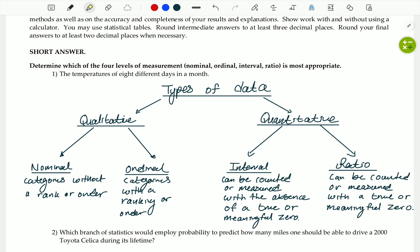Ratio is the same as interval, except there is a true or meaningful zero. So zero indicates you don't have it. You go to your bank account and it says zero dollars in your savings account. That is the absence of money. Nothing is there.